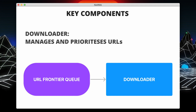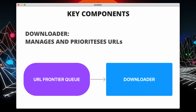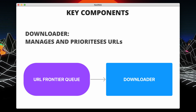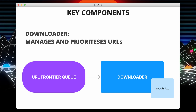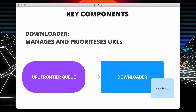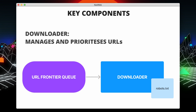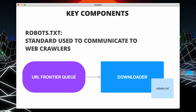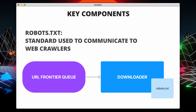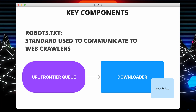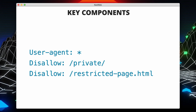Then we have the downloader. The downloader is responsible for fetching web pages. It handles HTTP requests, retries, and timeouts. It also respects rules defined in the robots.txt files to ensure ethical and responsible crawling. The robots.txt file is the standard used to communicate to web crawlers, and it specifies what crawlers are allowed to download. Here is an example of a robots.txt file.